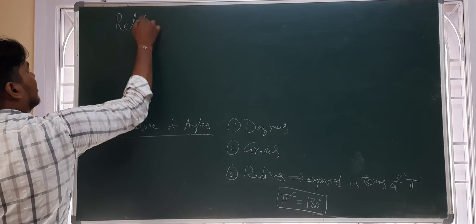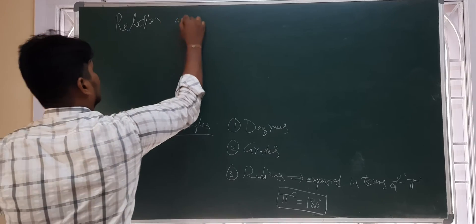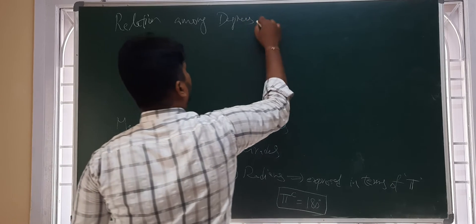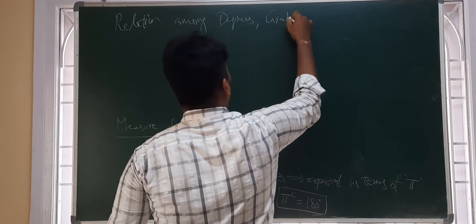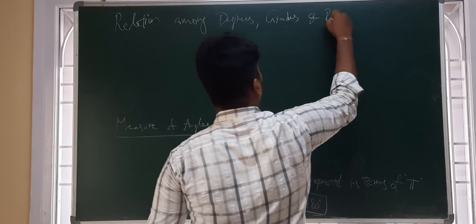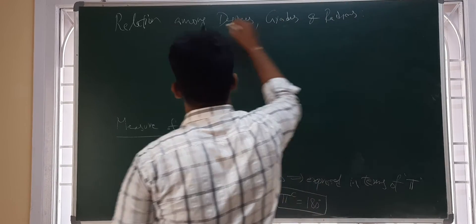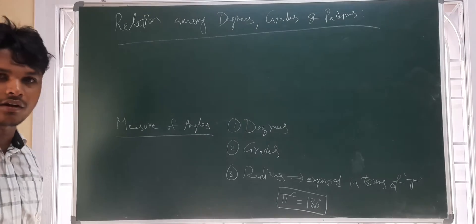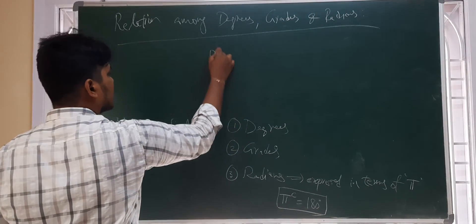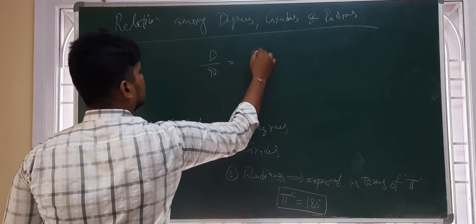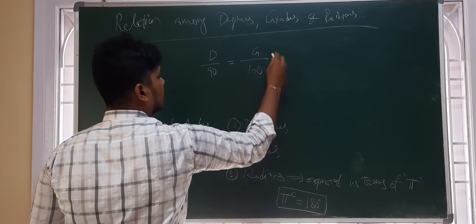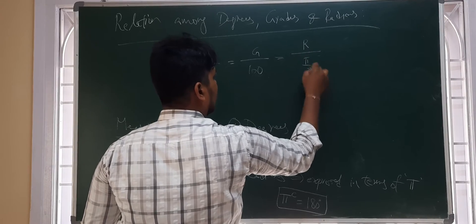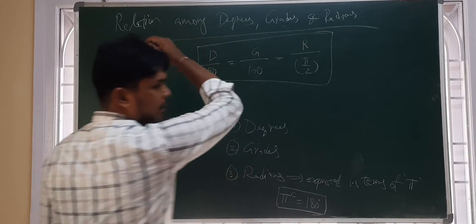Now, relation among degrees, grades, and radians. What is the relation among degrees, grades, and radians? It is given as D by 90 is equal to G by 100 is equal to R by pi by 2.